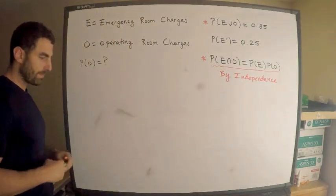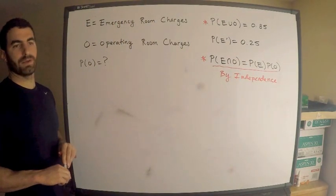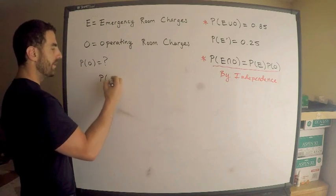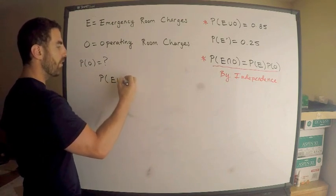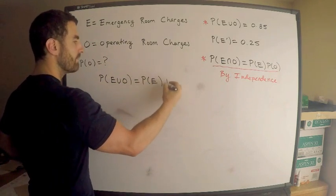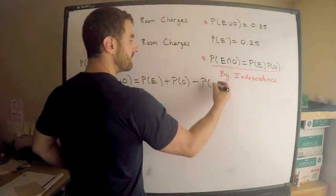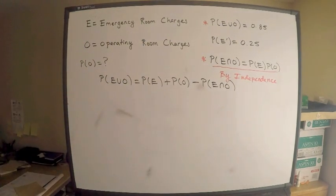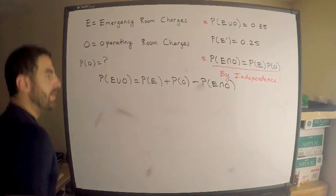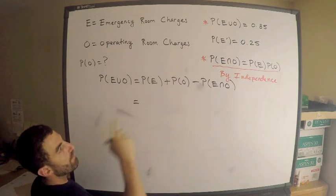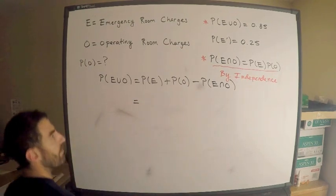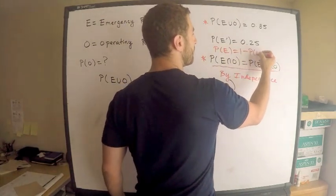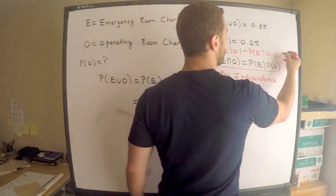Whenever you see these two things together, there are really only a couple of formulas you can use. The most typical formula is the following — use Venn diagrams if you prefer — but the probability of E or O equals probability of E plus probability of O minus the intersection, probability of E intersect O. Now let's use the given information. I have probability of E — and the probability of E equals 1 minus the probability of E complement, which is 0.75.